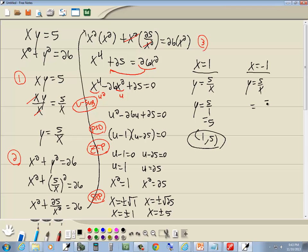This one, I'm going to have 5 over x, which is negative 1. So that's going to give us a negative 5. So this answer will be negative 1, negative 5.